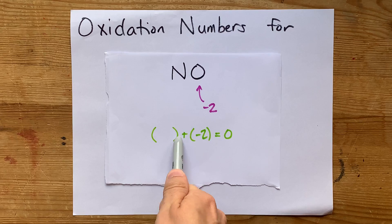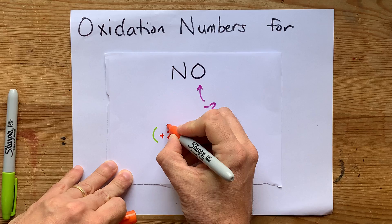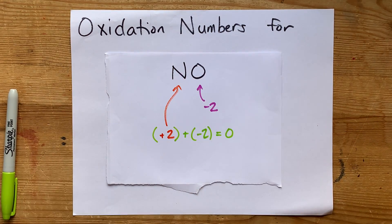Something plus negative two needs to equal zero. The oxidation number of the nitrogen, then, is going to be positive two.